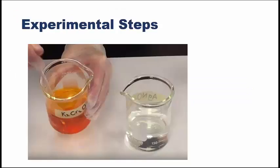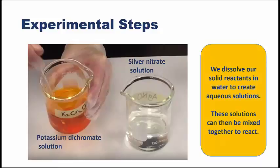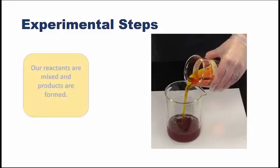Let's look quickly at the experimental procedure for this lab. This will help you understand what's going to happen and it will help you as you read over the lab itself. First off, we start with our two reactants, potassium dichromate and silver nitrate. In the beginning, we have them as solid reactants. So we dissolve those solid reactants in water to create aqueous solutions. These solutions can then be mixed together to react. We mix these two solutions together and we form some products.